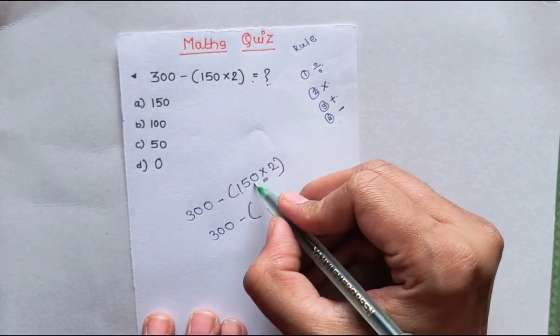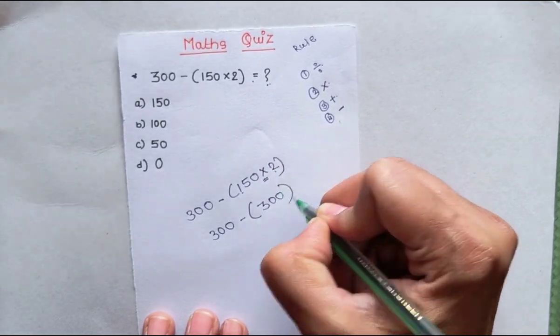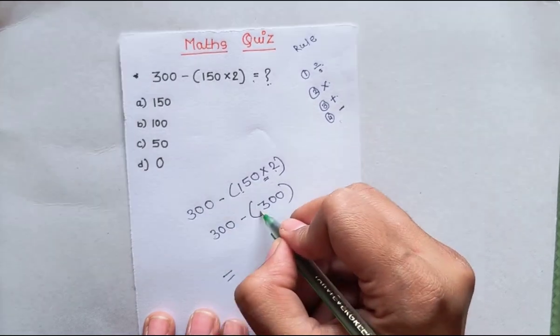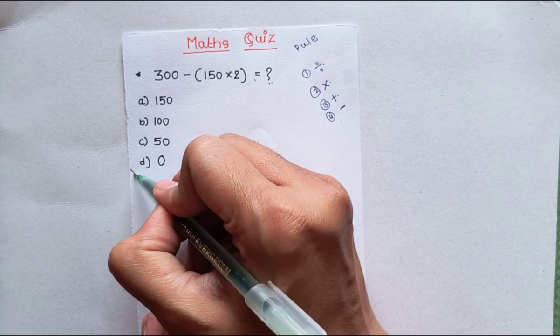And our answer is 300 minus 300 equals 0. So our answer is 0.